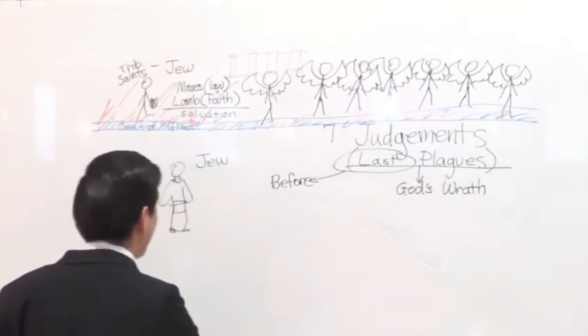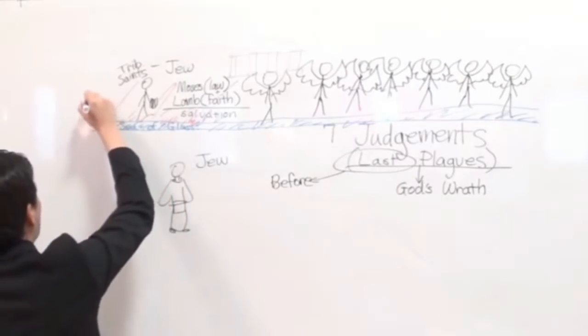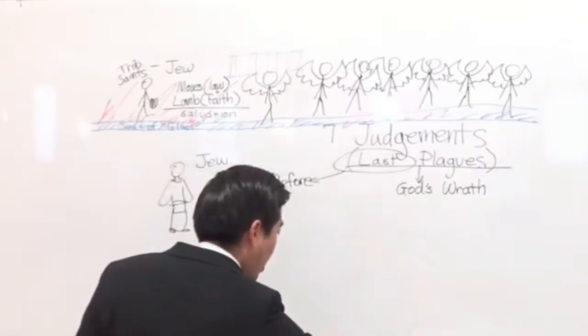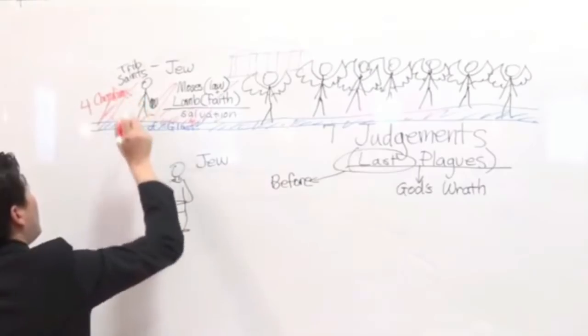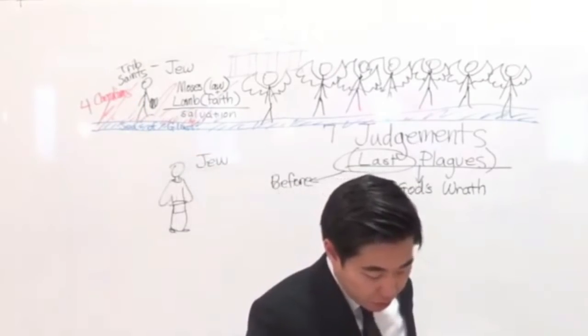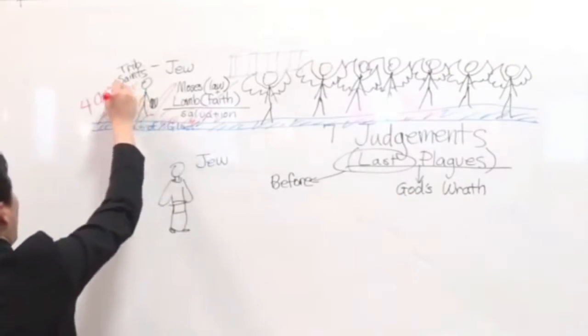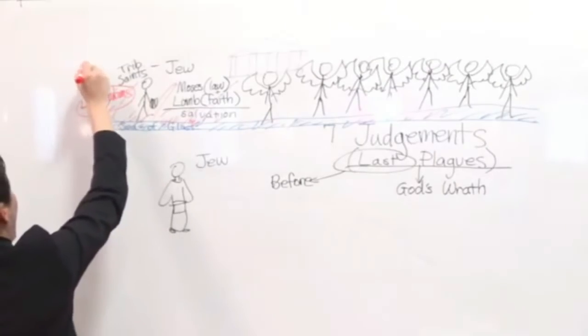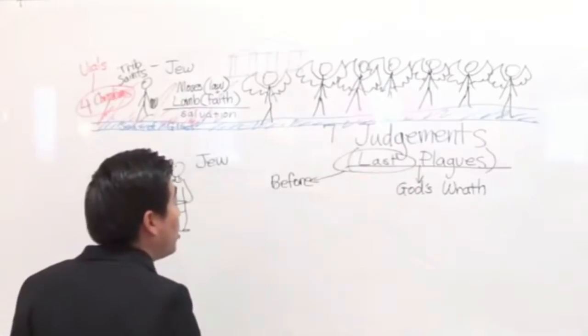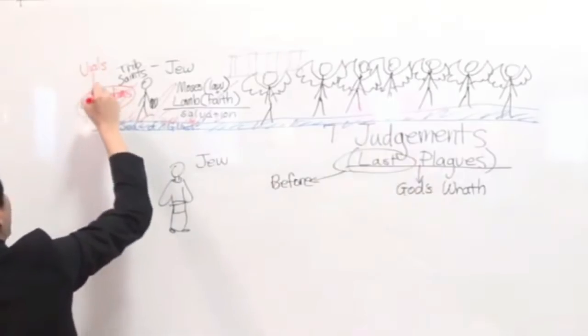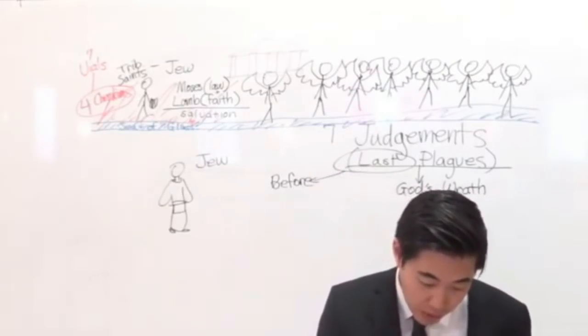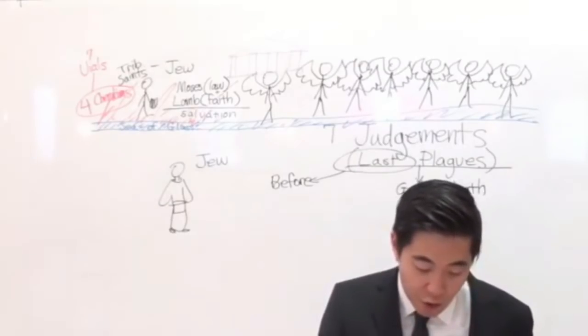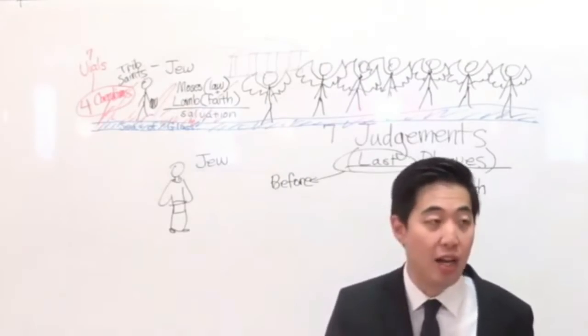And one of the four beasts gave unto the seven angels. Now remember, there are four beasts, Revelation chapter 5. Those are the four cherubims. So one of the four cherubims over here gave unto the seven angels seven golden vials. So you've got to realize one of the four cherubims was holding the vials. Now, these vials contain the plagues, because the angels who held the seven last plagues actually received it from this cherubim, the seven vials. The seven vials contain the seven plagues. Seven golden vials full of the wrath of God. Yeah, it's God's wrath, who liveth forever and ever. So God reigns forever and ever.